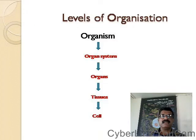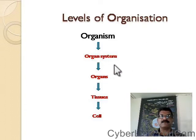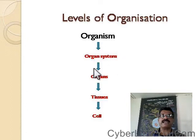You are an organism, I am an organism. If you take each organism, we can see that there are a large number of organ systems — digestive system, circulatory system, nervous system. Large number of systems joined together to form an organism.